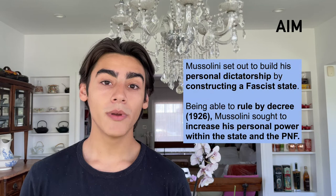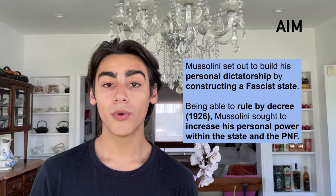I want to start this video exactly how we started the videos on Mussolini's economic policies — I'll link those up in the card if you haven't watched them. Basically, I want to begin by discussing Mussolini's main aim with his political policies. Mussolini's aim was to build a personal dictatorship in Italy, in the sense that he wanted to increase his personal power within the Italian government and within the fascist party.